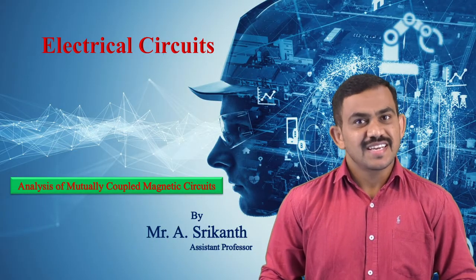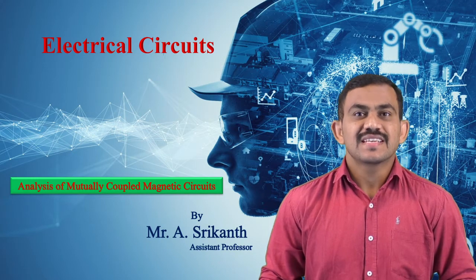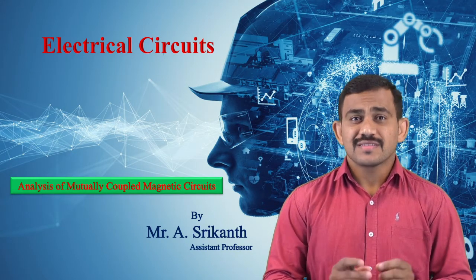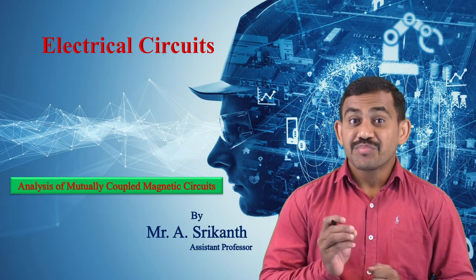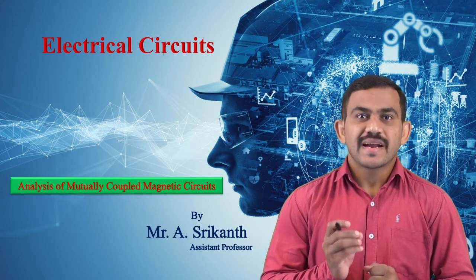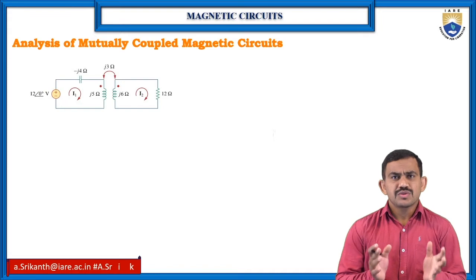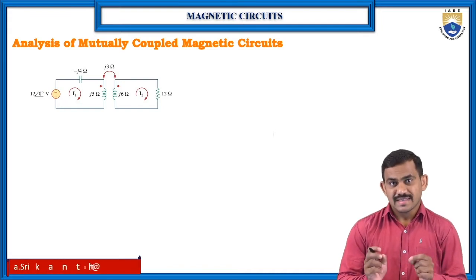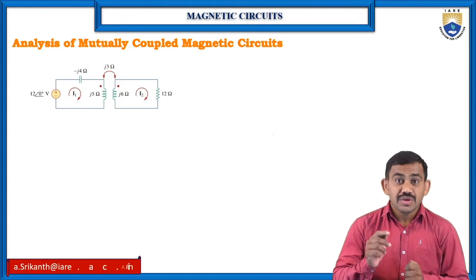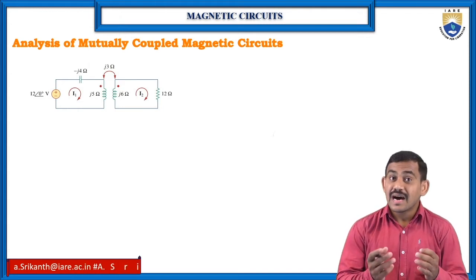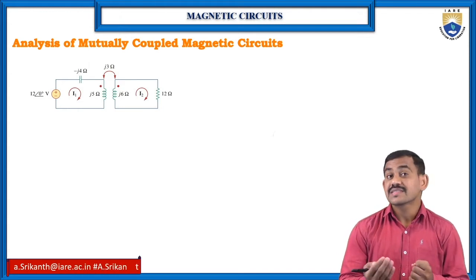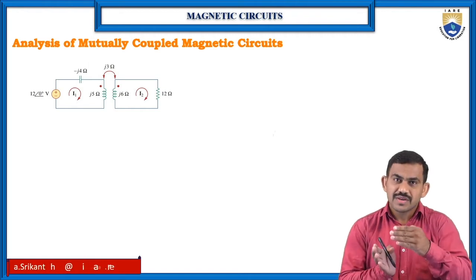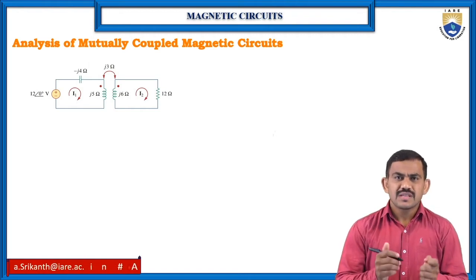Hello everyone, this is Regan working as H-term professor in electrical department. Here we have some analysis on mutually coupled magnetic circuits. Mutually coupled magnetic circuit means when two inductors are coupled mutually — what is the analysis, what are the currents, what is the voltage for the circuit or particular branch? We will check it now.